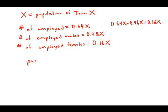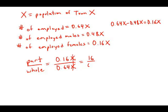When we consider our part-over-whole ratio, the part is 0.16X and the whole is all employed people. So we cancel the X's and get 16 over 64, which simplifies to 1 over 4 because 16 goes into 64 four times. One fourth is 25%, and this is answer choice C.